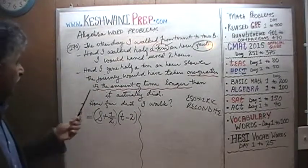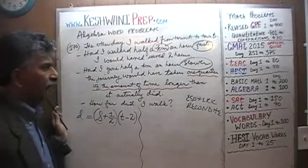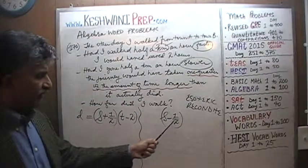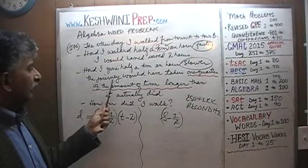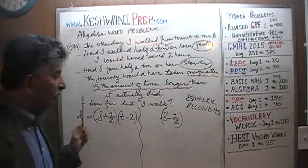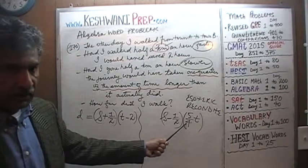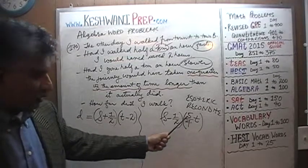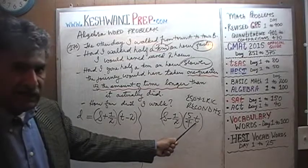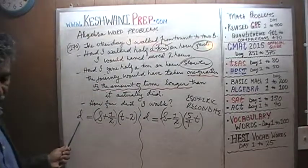Let's now find the second equation from the second part. It says: had I gone half a kilometer an hour slower — meaning our speed would be s minus one-half. What would have happened? The journey would have taken one quarter of the time longer. One quarter of the time longer means the journey would have taken five-quarters of the actual time — because four-quarters is the whole thing, and four quarters plus one quarter is five quarters.